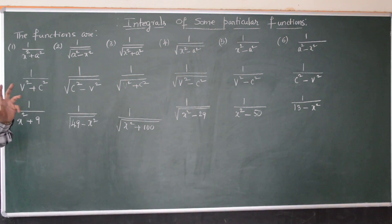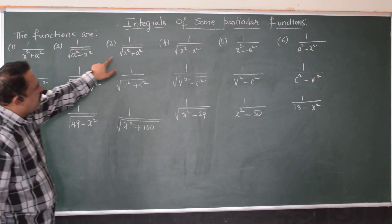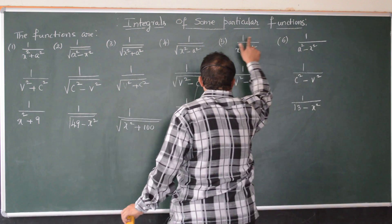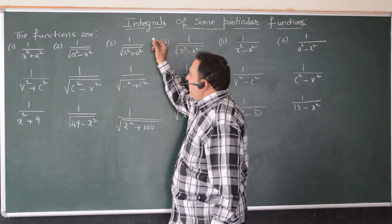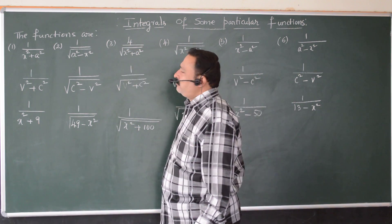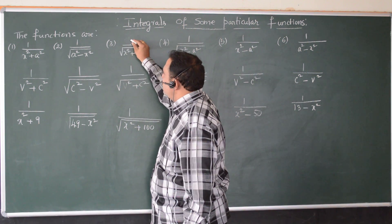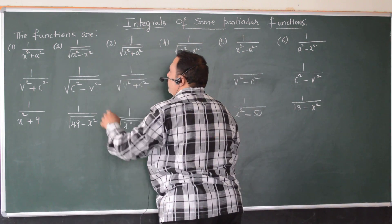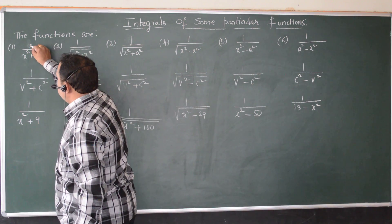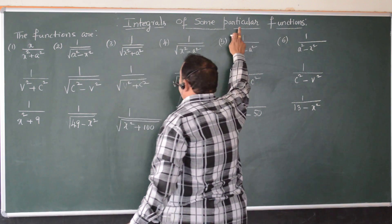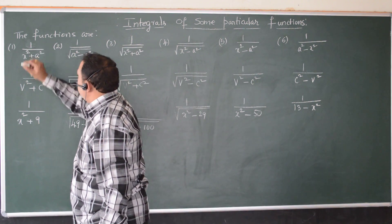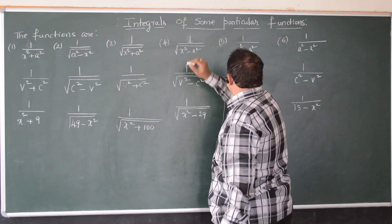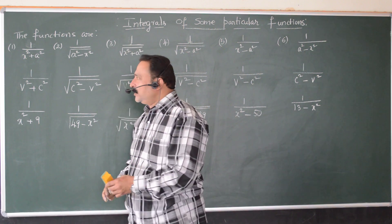Observe and register these functions. There are 6 particular functions in total. The numerator of all 6 functions is unity. If there is some number like 4 in the numerator, it can be taken outside the integral sign and one comes there automatically. But there must not be any variable in the numerator — if there is an x or x² in the numerator, it is not a particular function and the method of integration is different.